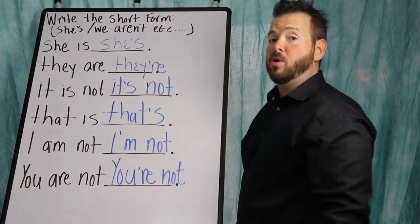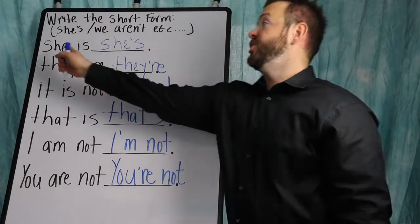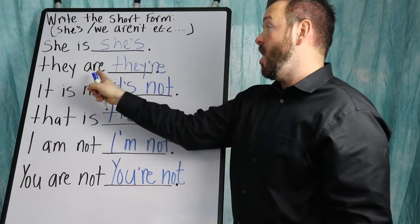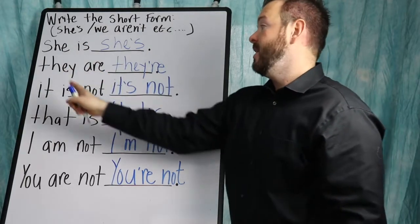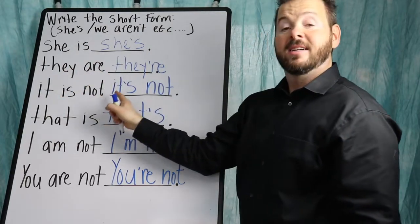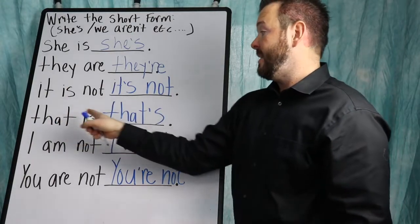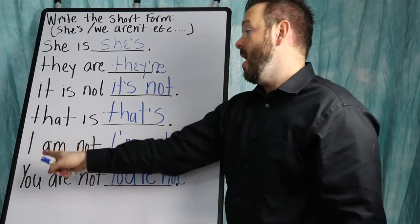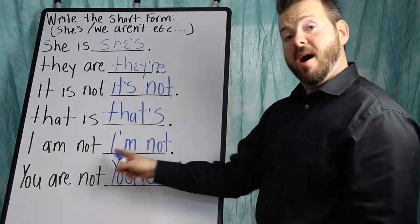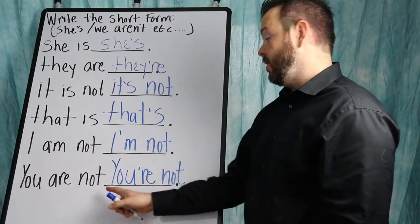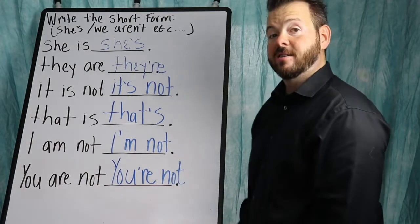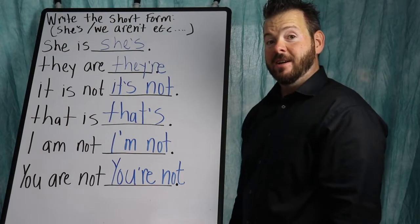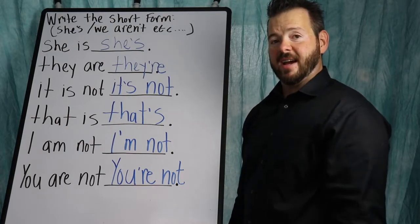I'll read everything again once more so you can hear it. She is, she's. They are, they're. It is not, it's not. That is, that's. I am not, I'm not. You are not, you're not. Make your corrections if you have any. Good job, we'll move on to the next.